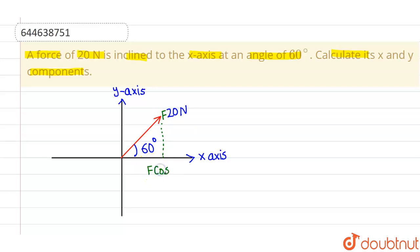This means the component will be f cos 60 degrees here, which can be written as 20 times cos of 60 degrees. Here f equals 20 newtons.